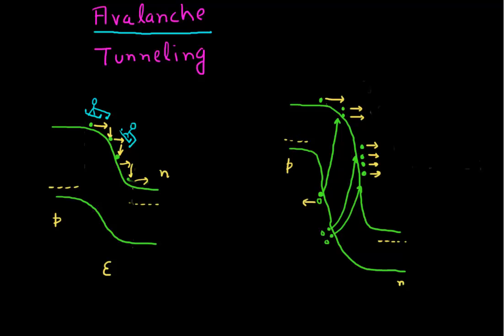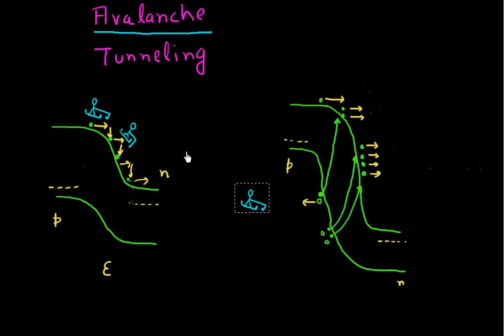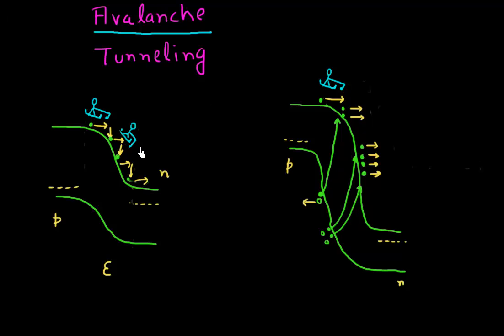On the other hand, what's happening in the case when I'm applying very high voltages — these electrons are trying to ski down the hill. But what happens in this case is, if they fall down, the slope is way too high over here.